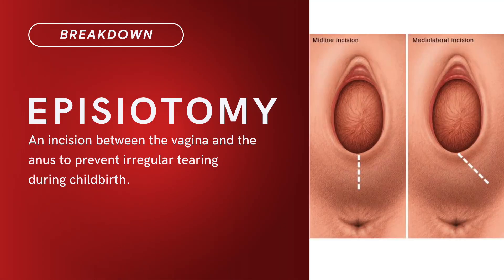Compound term: episiotomy. Brief definition: an incision between the vagina and the anus to prevent irregular tearing during childbirth.